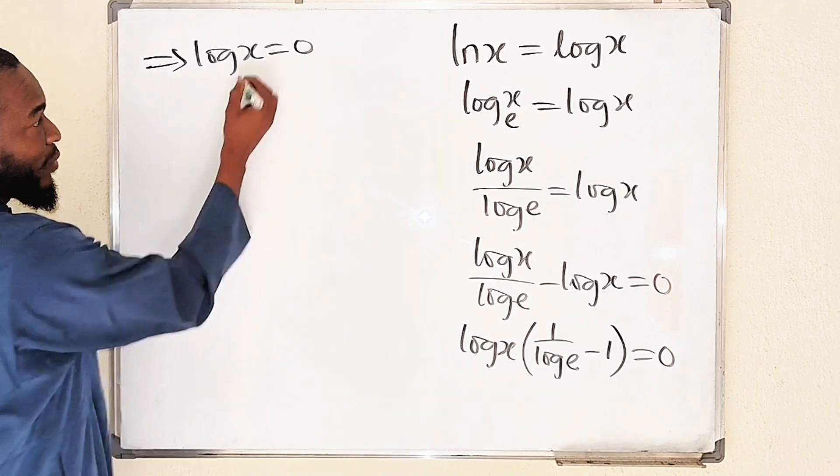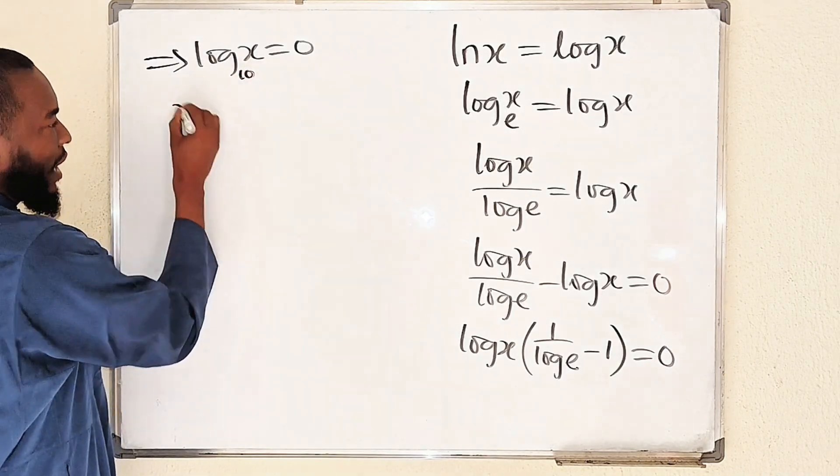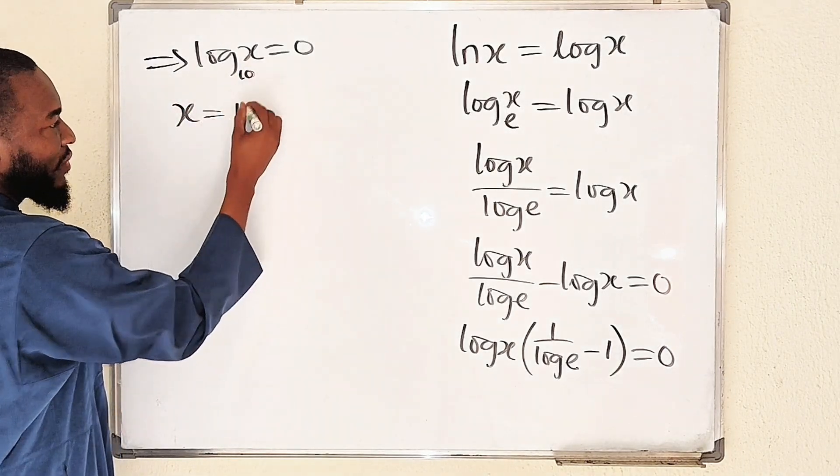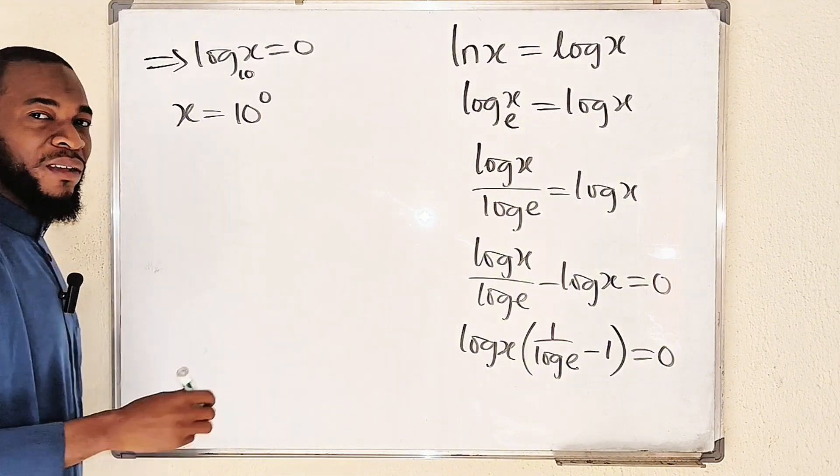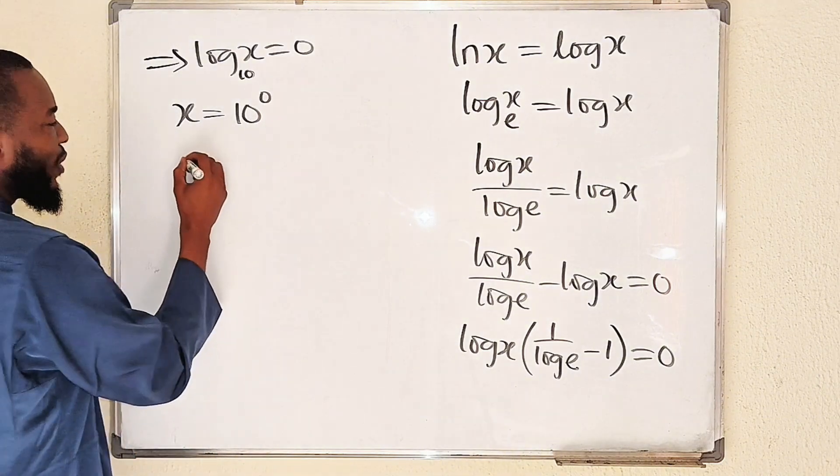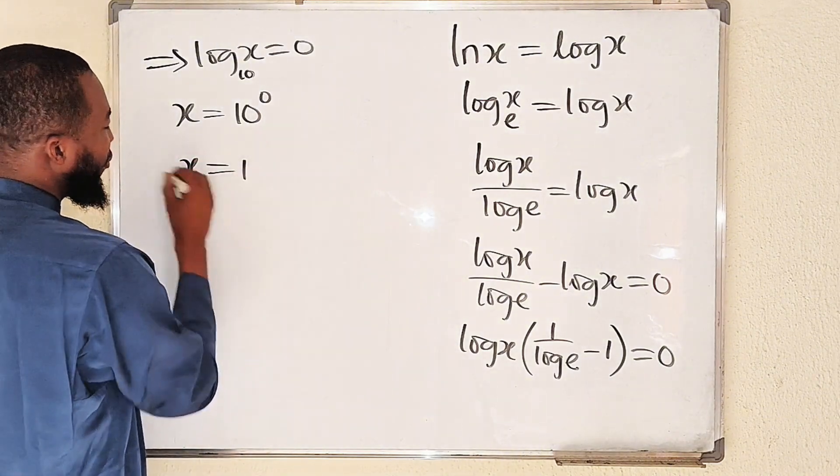And from definition, remember this is base 10. x is equal to this base raised to the power of 0. And 10 to the power of 0 is equal to 1. Therefore, x is equal to 1.